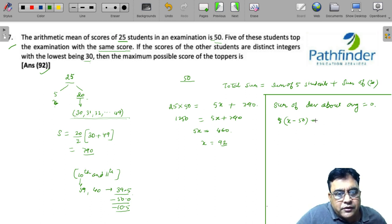Deviation is minus 10.5, so we have 20 into minus 10.5. So 5x minus 250 minus 210 is equal to 0.